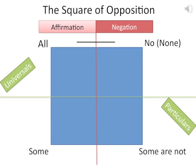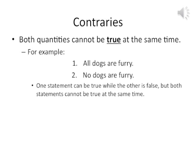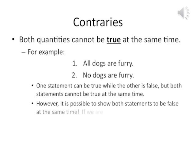On the top end, let's look at our universal quantities: all versus no. With these quantifiers, there is a relationship between them — they are what are known as contraries. Both quantities cannot be true at the same time. For example, 'all dogs are furry' and 'no dogs are furry' — one statement can be true while the other is false, but both statements cannot be true at the same time. However, it is possible for both statements to be false at the same time.